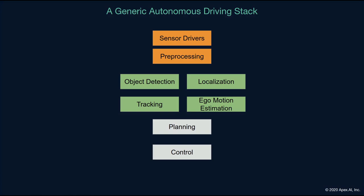Here is a very generic and simplified view of an autonomous driving stack. The sensing aspect is expanded into sensor drivers and some common preprocessing. The understanding portion of the stack is broken up into two pillars: one is object detection, which then talks to tracking, and in parallel there's also localization which talks to ego motion estimation. The output of these two pillars — tracked objects and an ego motion estimate — is then passed to planning and then control.